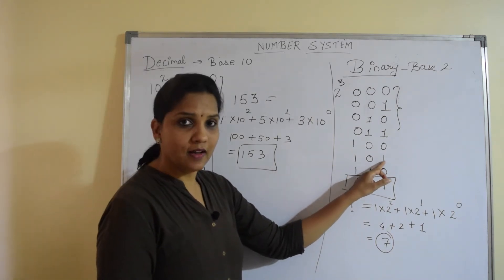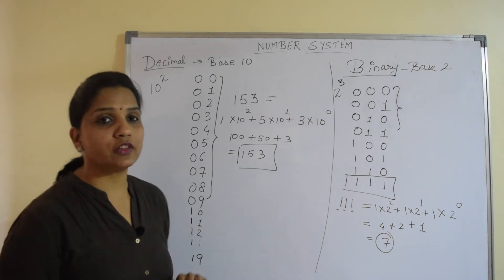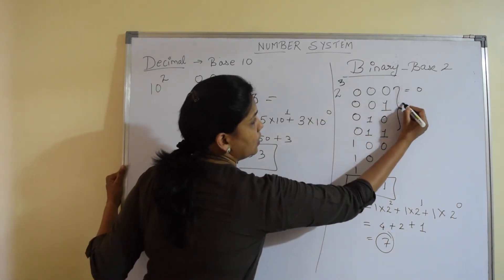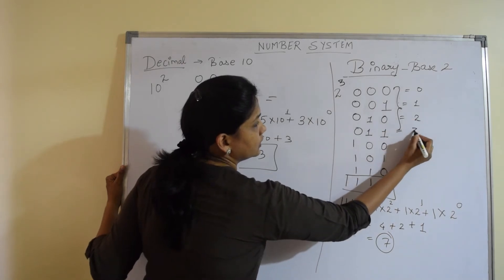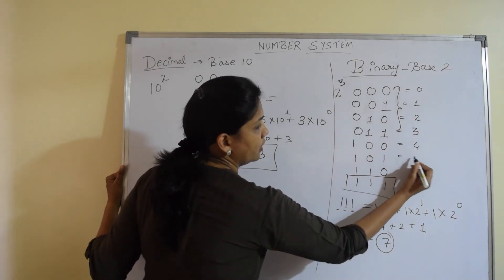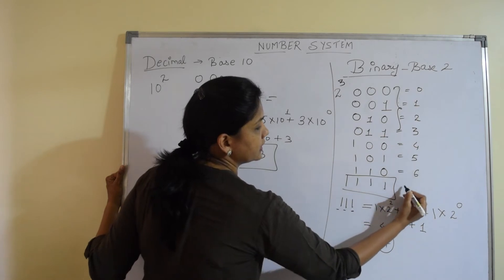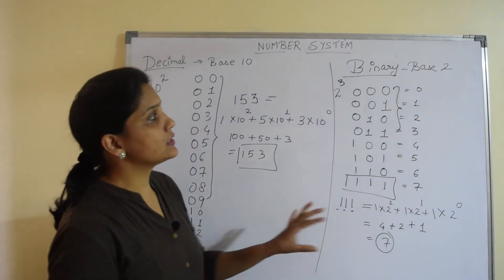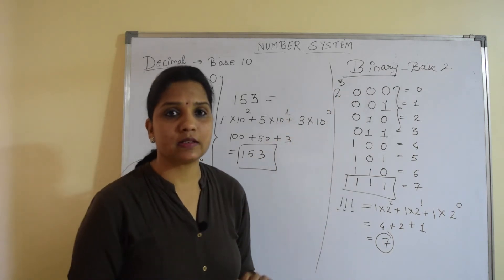101 represents 5 of the decimal number system. So I can say, this is 0, 1, 2, 3, 4, 5, 6 and 7. In a nutshell, this is how the binary number system works.